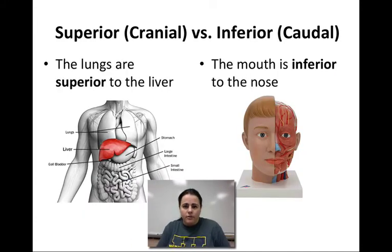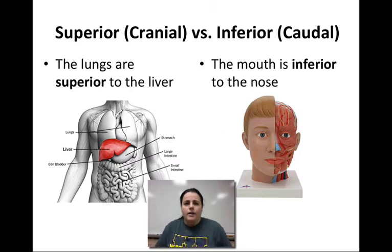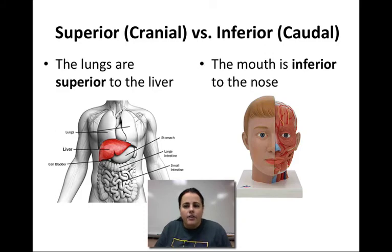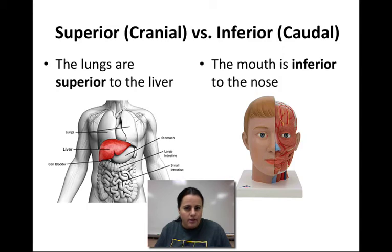Here are two examples. The lungs are superior to the liver because the lungs are above the liver. The mouth is inferior to the nose because the mouth is below the nose.